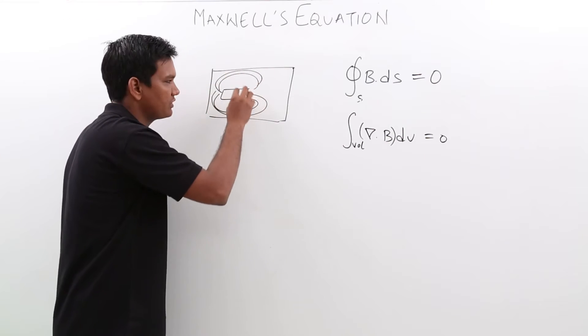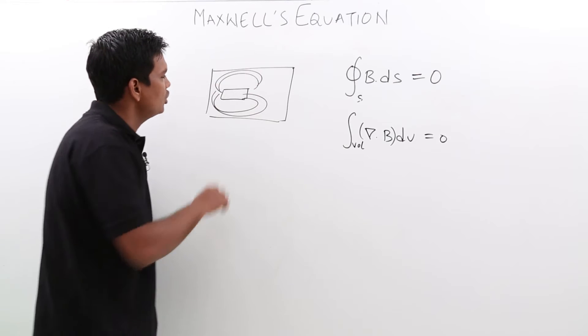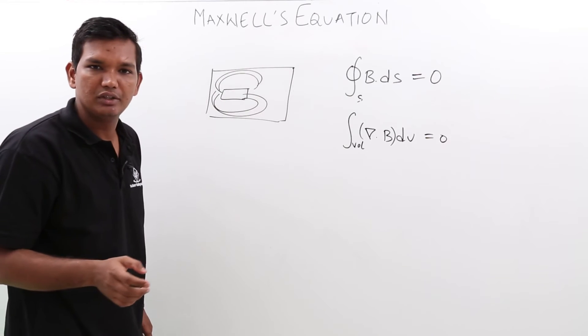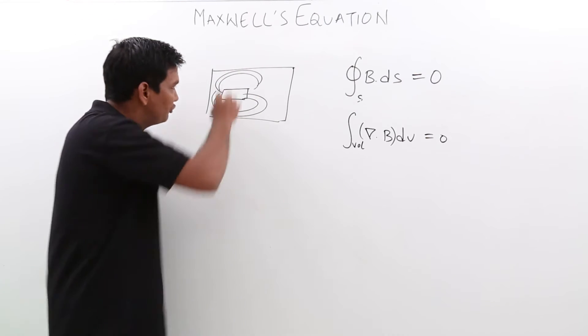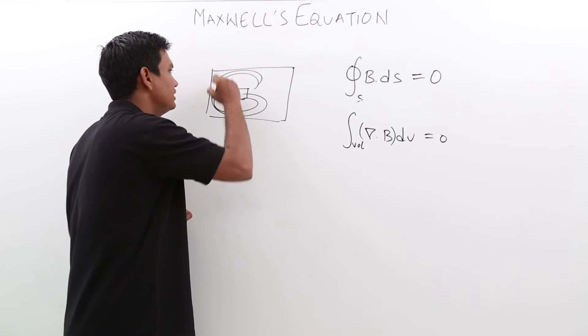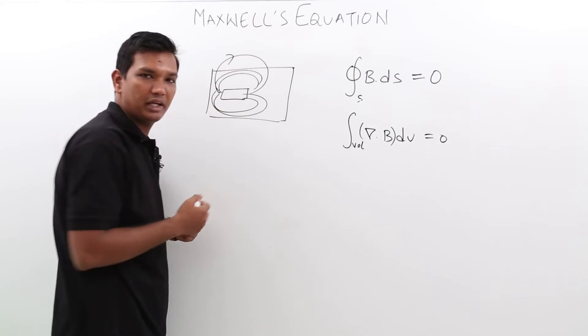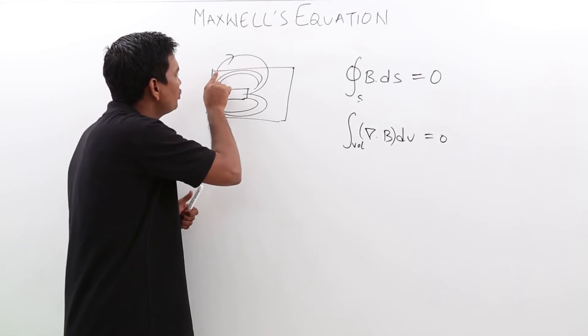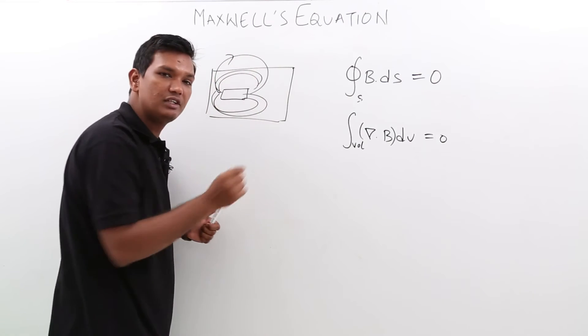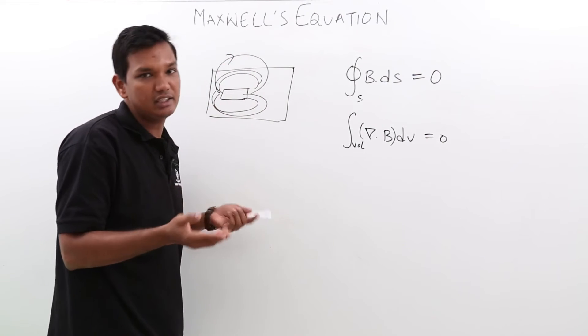Let us say that this box is a closed surface and I put a magnet there. Will there be field lines going out? The answer is no. If the field lines go out, for example this, it will also come in. So the amount of field lines leaving this and amount of field lines coming in is equal, right?